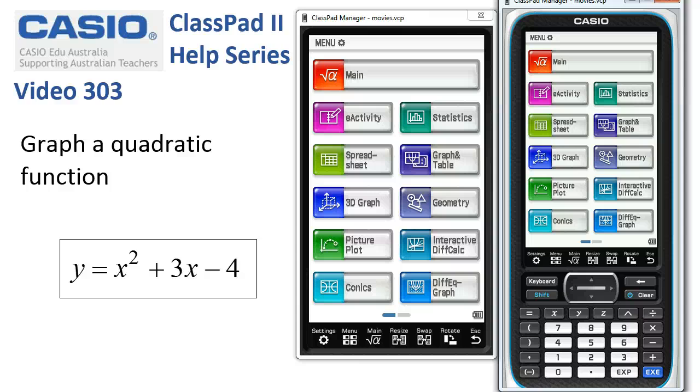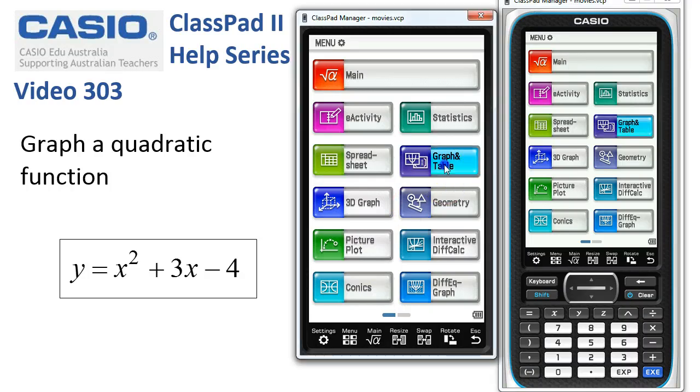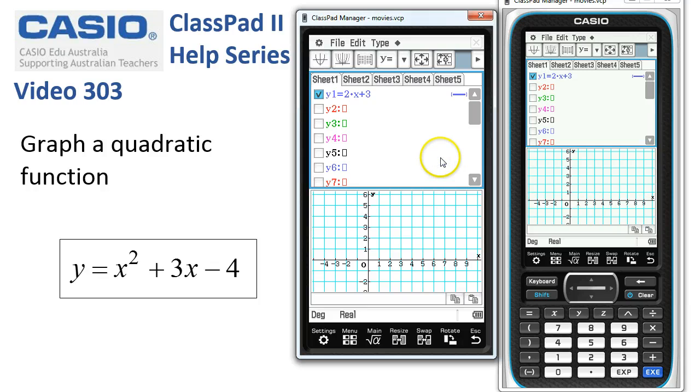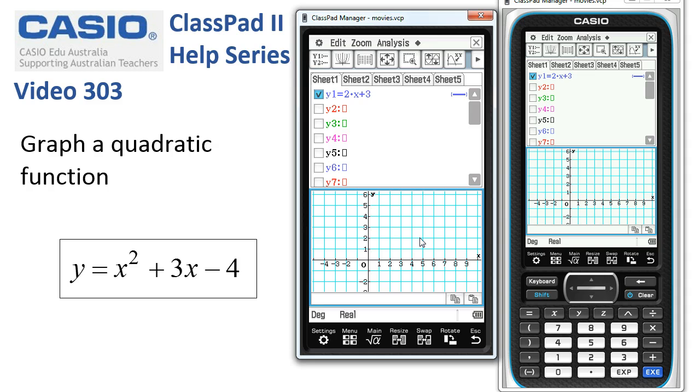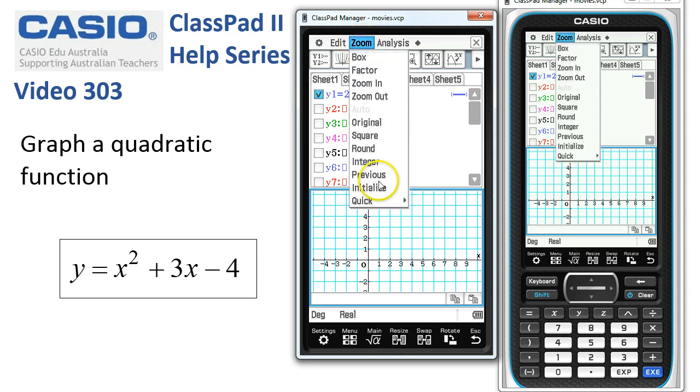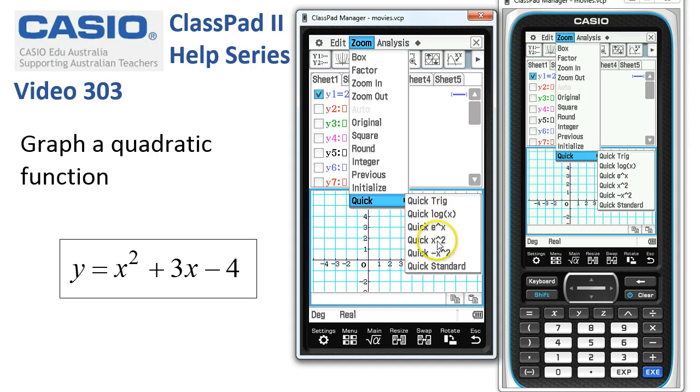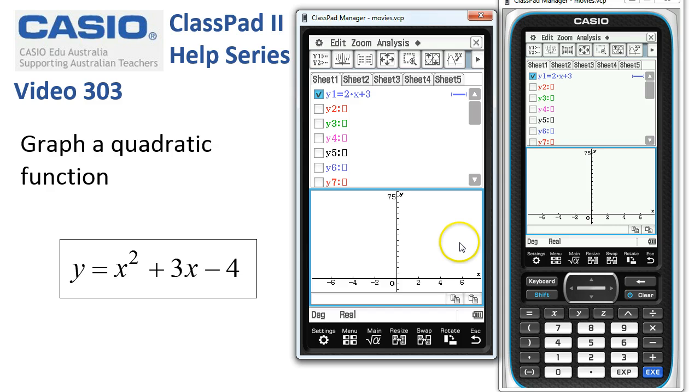Graph quadratic function and we'll do this in the graph and table application. Now first off, I'm going to tap into the downstairs graph window and because I know I'm graphing a quadratic, under zoom and quick there is a quick quadratic function, so let's use that one.